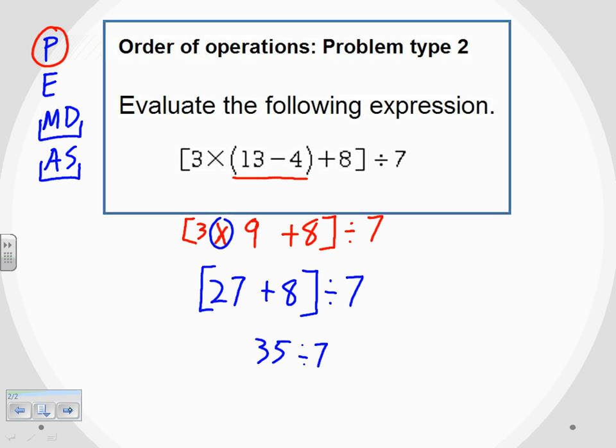So 35 divided by seven, that's all I have left to do. 35 divided by seven is five. And I have evaluated those operations all the way down to one number. And that's five.